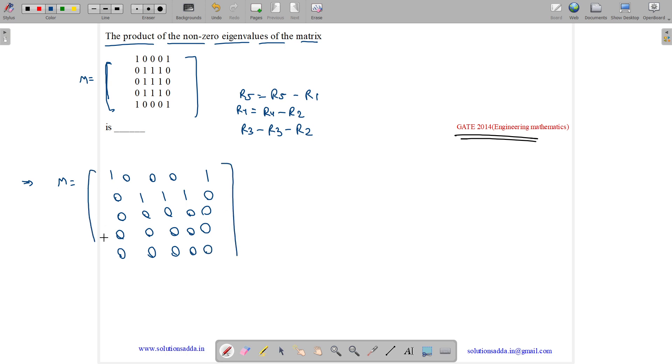So the rank equals to number of non-zero rows or columns. So here we have 2 non-zero rows or columns. So rank of the matrix is 2, and the number of non-zero eigenvalues are 2, which is equal to the rank of the matrix.